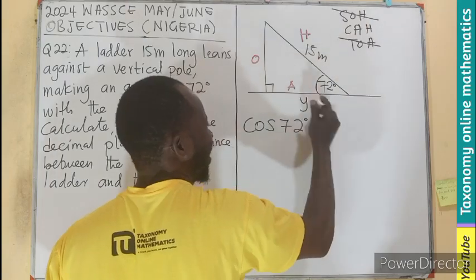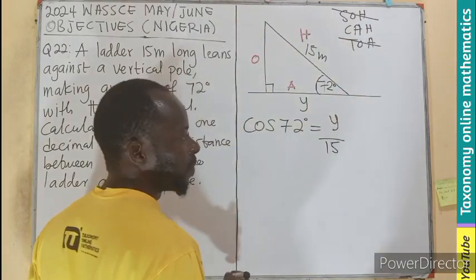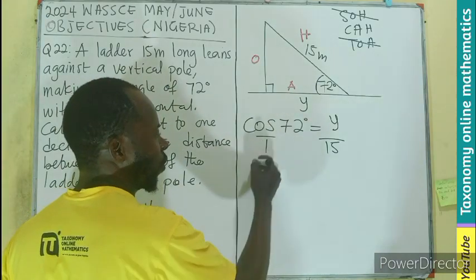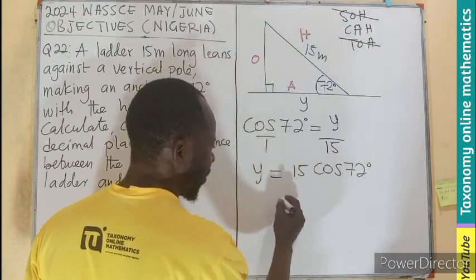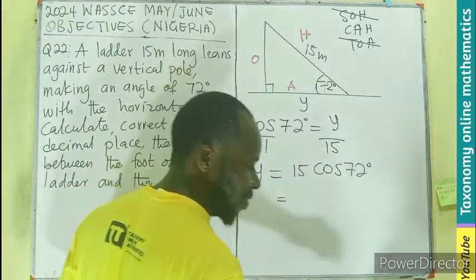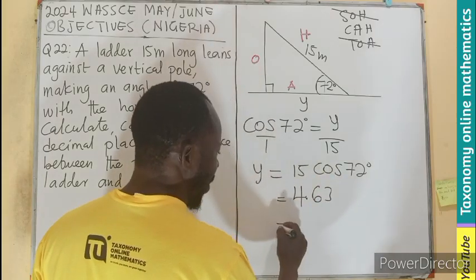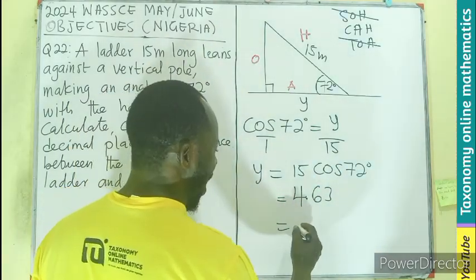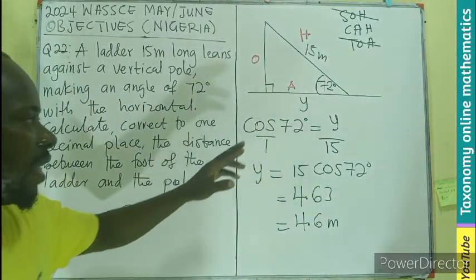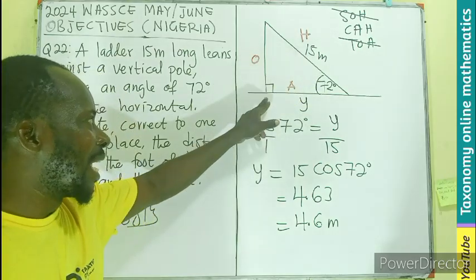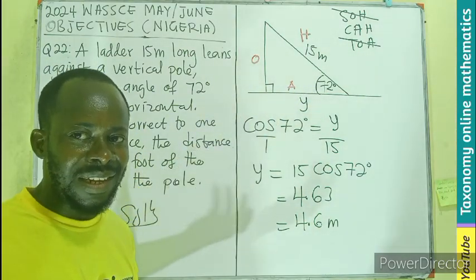So cosine of 72 degrees equals the adjacent side y divided by the hypotenuse 15. Cross-multiplying, 15 multiplied by cosine of 72 degrees gives us 4.63, which to one decimal place is 4.6 meters. So the distance between the foot of the ladder and that of the pole is 4.6 meters.